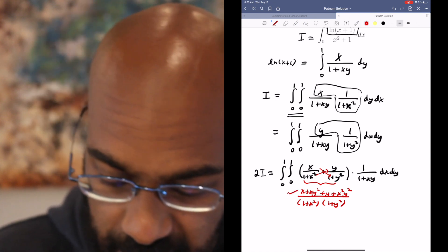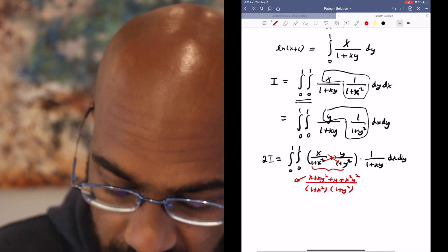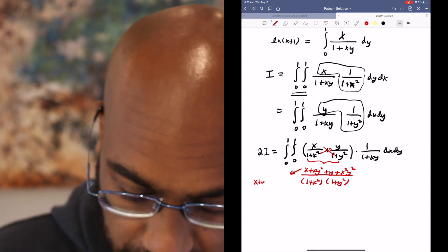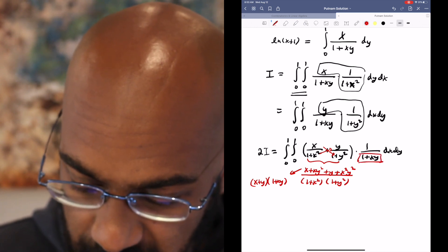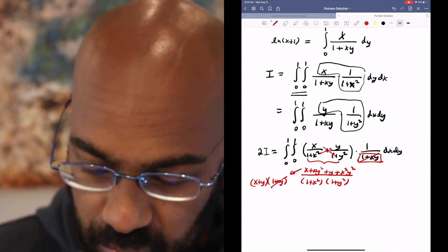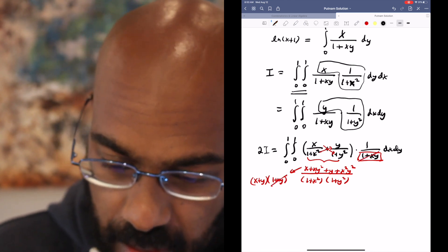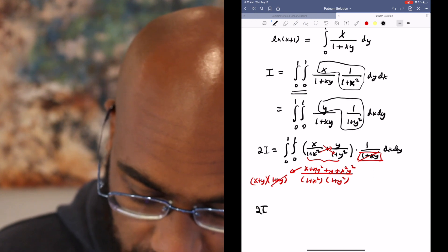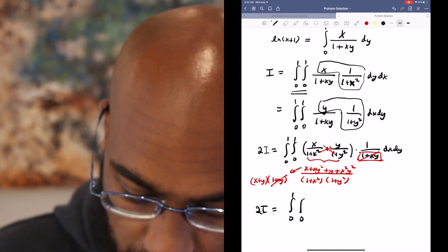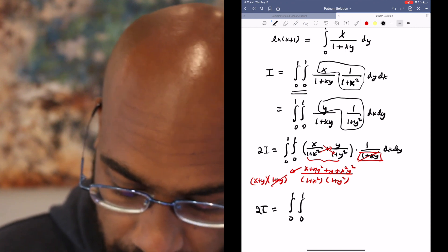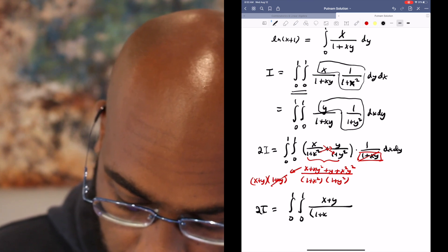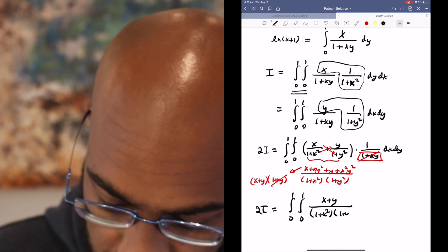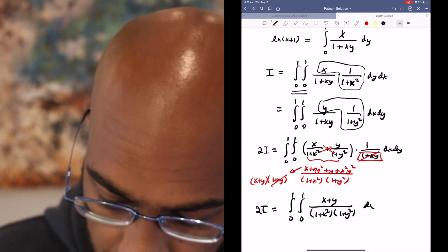The interesting part about this is that the numerator actually factors into x plus y times 1 plus xy, and the reason that's interesting is we have this 1 plus xy right over here, so these two divide each other out. So we get that twice the integral in question is the integral from 0 to 1 integral from 0 to 1 of the quantity x plus y over 1 plus x squared times 1 plus y squared dx dy.